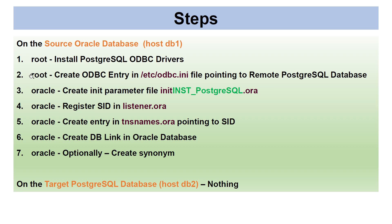There are some steps to do on your source Oracle database server — in my case host DB1. As root, we need to install PostgreSQL ODBC drivers. Then create an ODBC entry in the /etc/odbc.ini file pointing to the remote PostgreSQL database. Once that is done, switch to the Oracle user. As Oracle, create an init parameter file — I named mine inst_postgresql — this name becomes your SID. Register that SID in listener.ora, then create an entry in tnsnames.ora pointing to that SID. Once this is done, you are ready to create the DB link in the Oracle database.